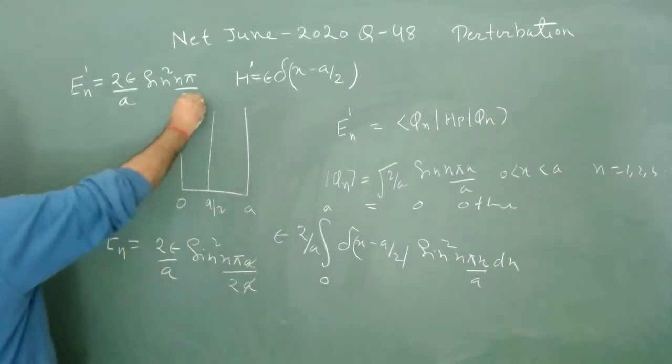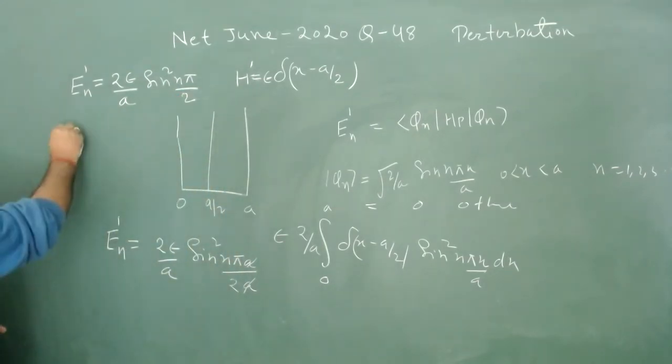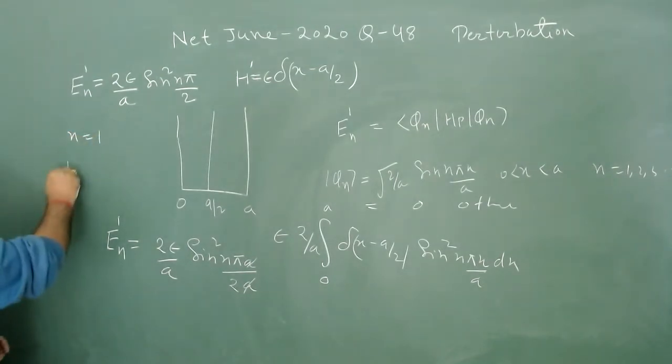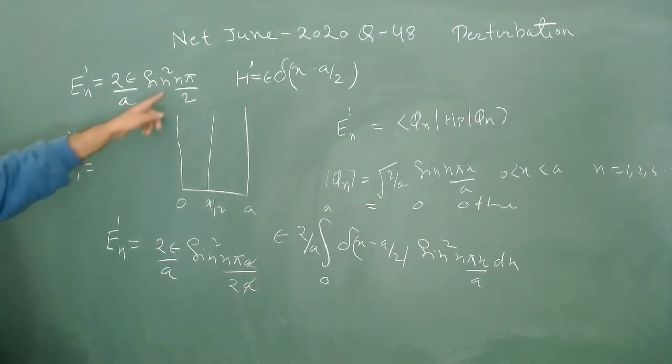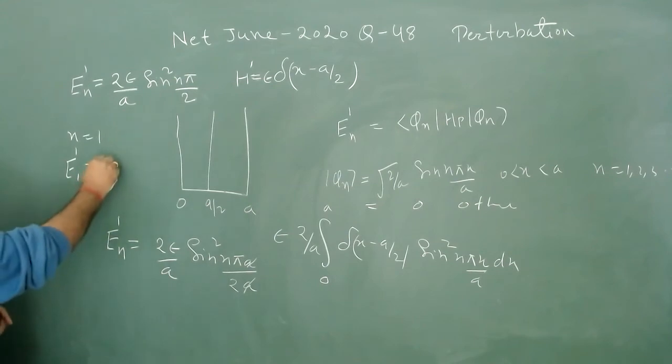For the ground state, n equals 1, so we have E11. For n equals 1, this value is basically 2*epsilon/a, because when n equals 1, we get sin^2(pi/2) which equals 1.